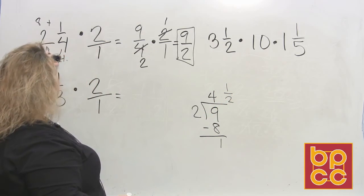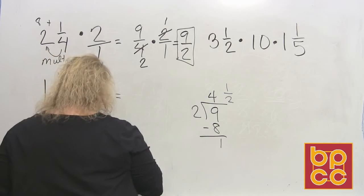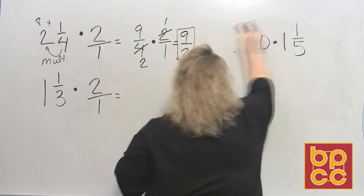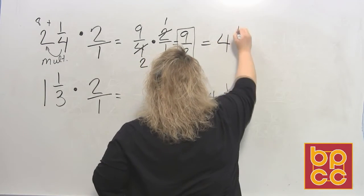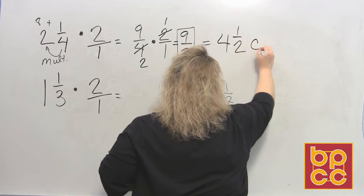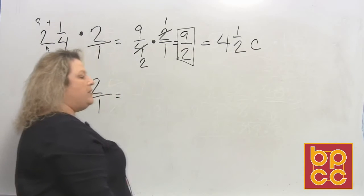So when I take 2 and 1/4 and I double that recipe, now I have, and I ran out of room, I'll erase this, 4 and 1/2 cups of brown sugar. So now I want to do the next one.